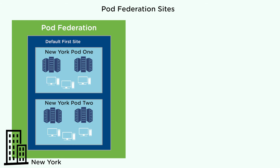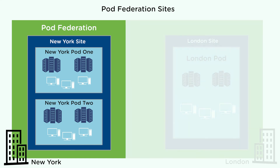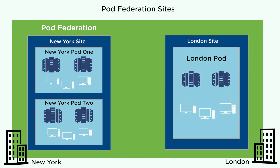You can change the default first site name, and you can also create and configure sites to suit your own requirements. For example, the pod federation in this diagram contains two sites — one in New York and one in London. The New York site contains two pods and the London site contains one pod. When pods are in multiple geographical locations, as in this example, you must configure each pod in a separate site.